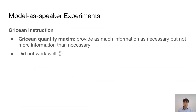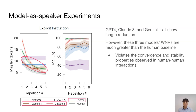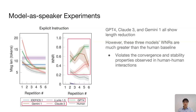We then tried to elicit the adaptation behavior with increasingly explicit prompts. We started with instructions based on the Gricean quantity maxim, telling the model to provide as much information as necessary but not more information than needed. But this did not work well. We then tried more explicit instructions specifying that the model should gradually condense the messages. This did seem to help at first glance — specifically, GPT, Claude, and Gemini all show length reduction. However, their word novelty rates are much greater than humans'. This is surprising because when humans' messages shorten, they are also converging and stabilizing. This deviation from human behavior is problematic.